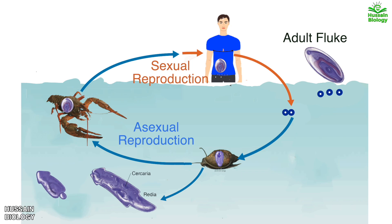These circaria leave the snail and enter the crayfish. Within the crayfish, the circaria encyst to produce metacercaria, and then the cycle continues.